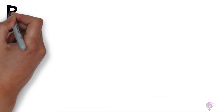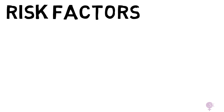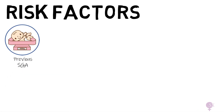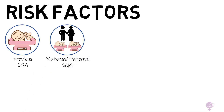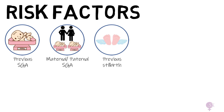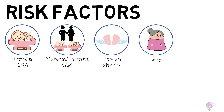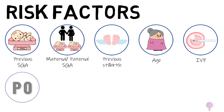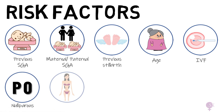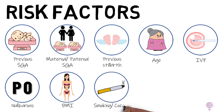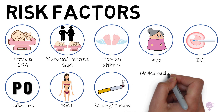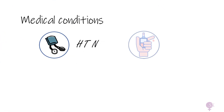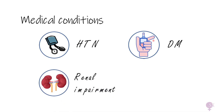In order to organize appropriate monitoring and observation of those mothers who are most at risk of having an SGA baby, we have identified some risk factors, which are very important as they can help to guide antenatal care. These include a previous SGA baby, maternal or paternal SGA, a previous stillbirth, advanced maternal age, an IVF pregnancy, a nulliparous woman, low BMI, smoking or cocaine use, and some medical conditions including hypertension, diabetes, renal impairment, and antiphospholipid syndrome.